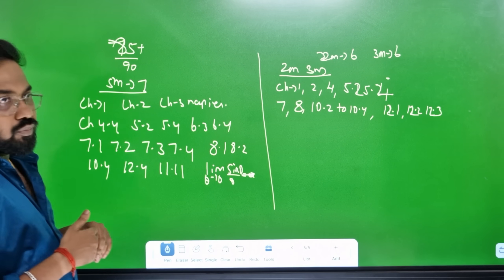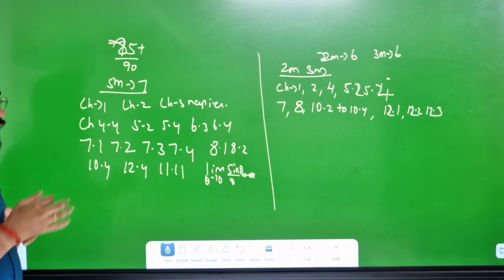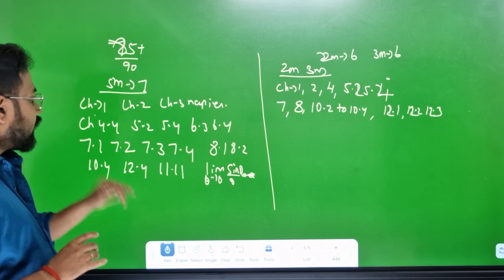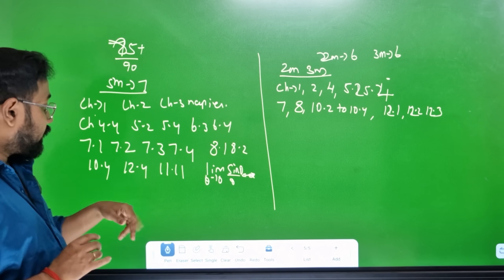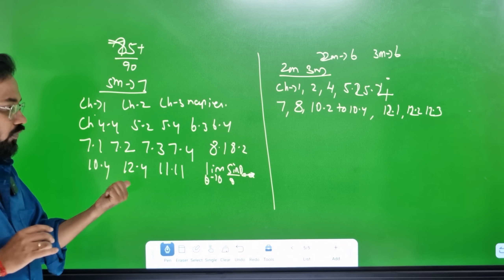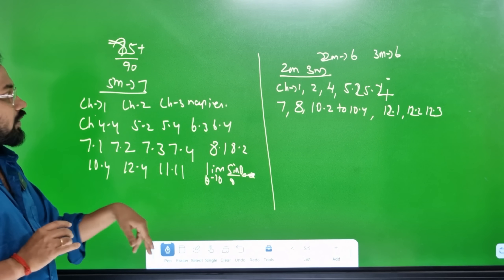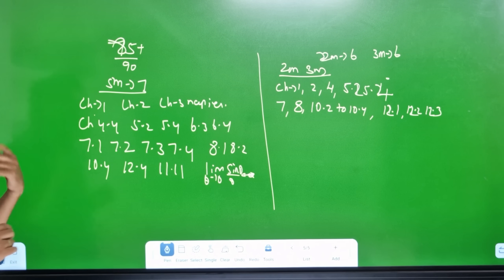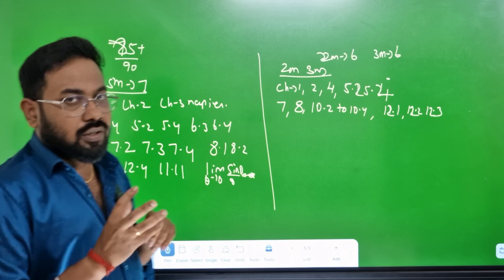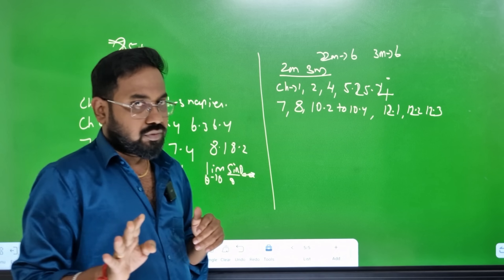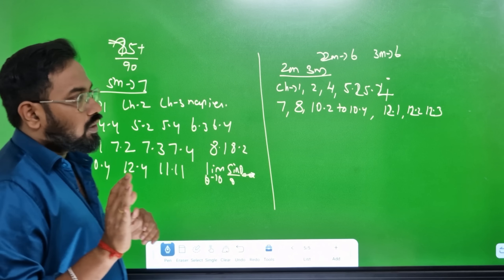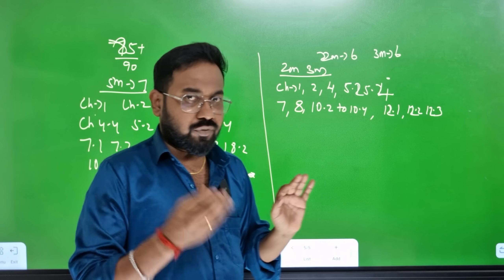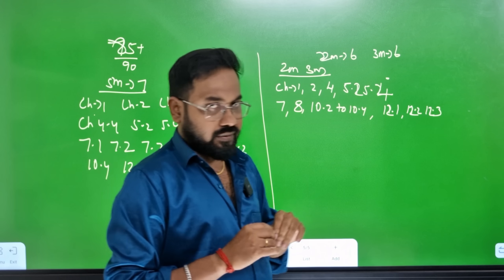85 plus or 90 plus — it's a light extra. Chapter 1, Chapter 2 is full. Chapter 3 — Napier formula, 4.4, 5.2, 5.4, 6.3, 6.4, 7.4, 8.1, 8.2, 10.4, 12.4, 11.4, 11.1. Also sections 11, 12, 8.5, 9.2, 9.5. Section 8.5 and 9.5 — that is easy. The difference is 12.1, 12.2, 12.3 — probability. That is easy.